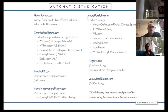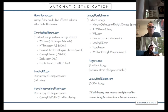If you put a value on all these various websites we're syndicating through to automatically, we're looking at between $15,000 and $20,000 a month in advertising that your clients are getting through our affiliations. Leading RE is our relocation website — recently they began representing all listing price points, not just $500,000 and up. So your listing is on the Leading RE website. MayfairInternationalRealty.com also syndicates automatically through, and they will syndicate your listing through to Country Life UK if it is at the $1 million threshold.